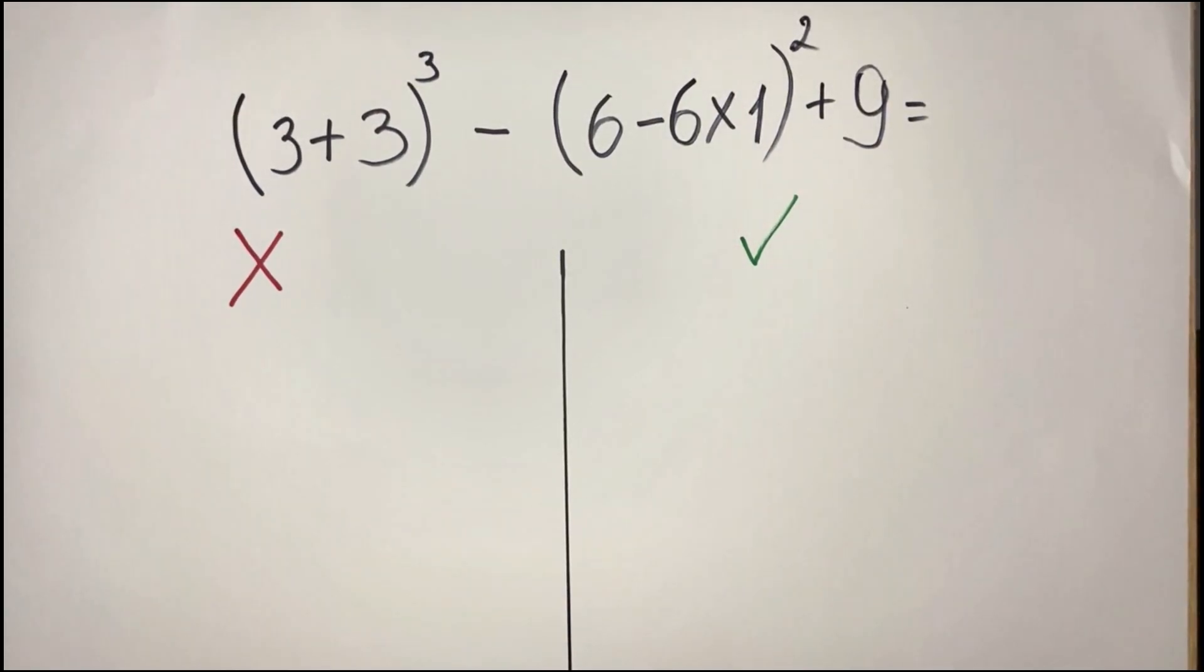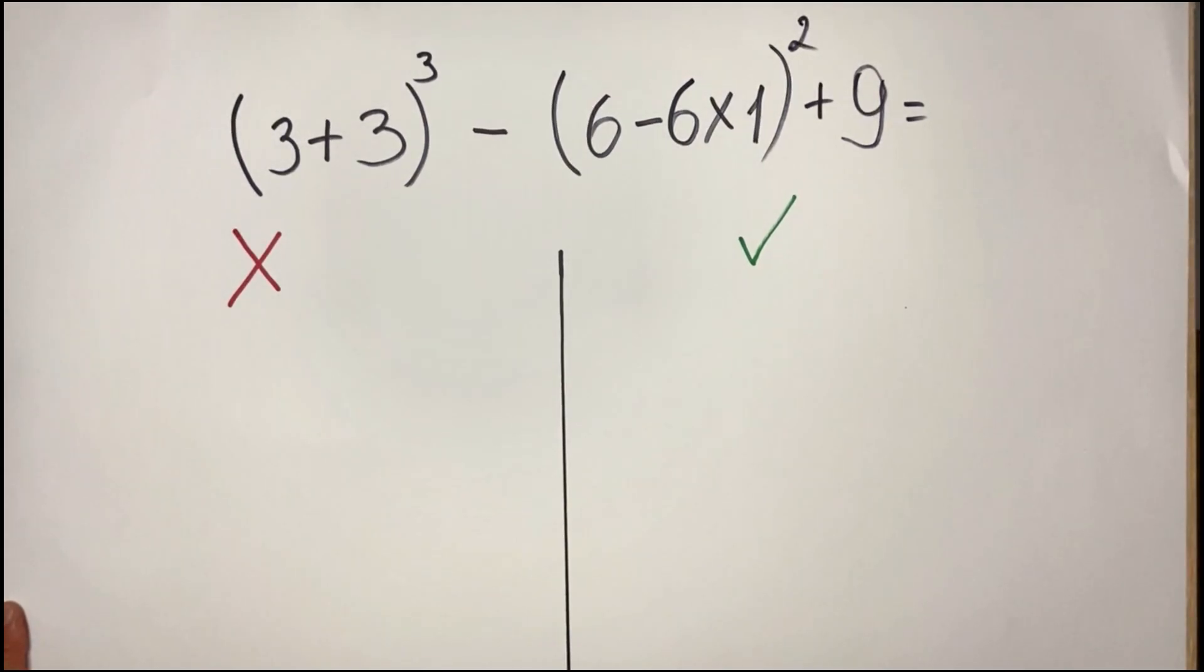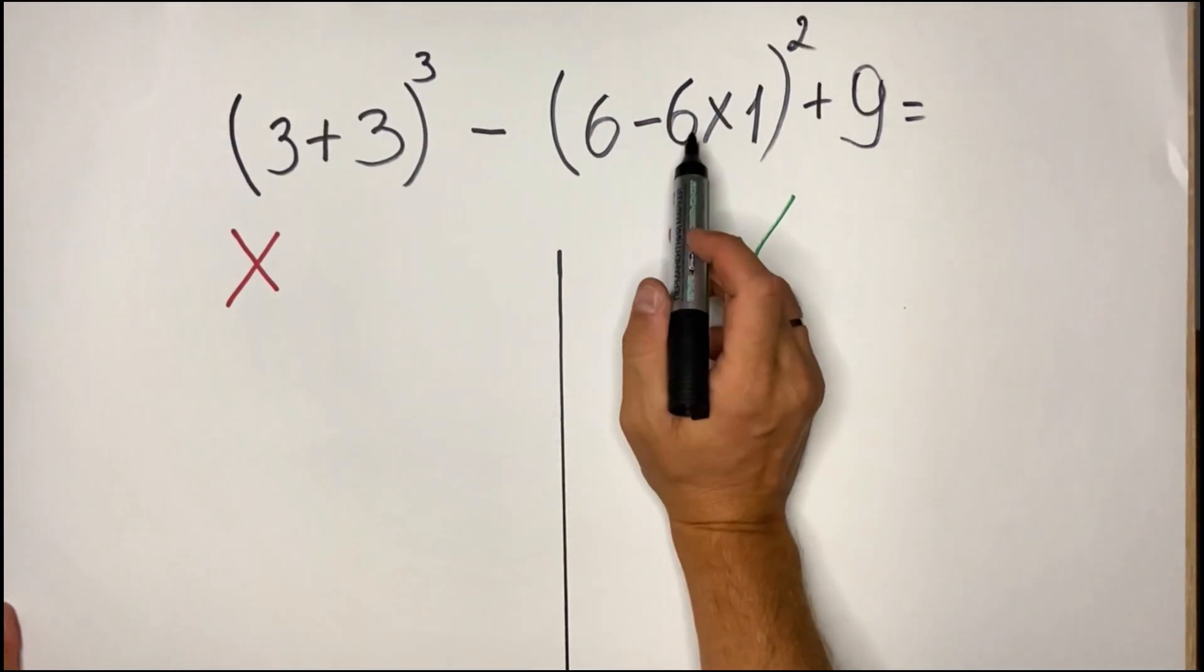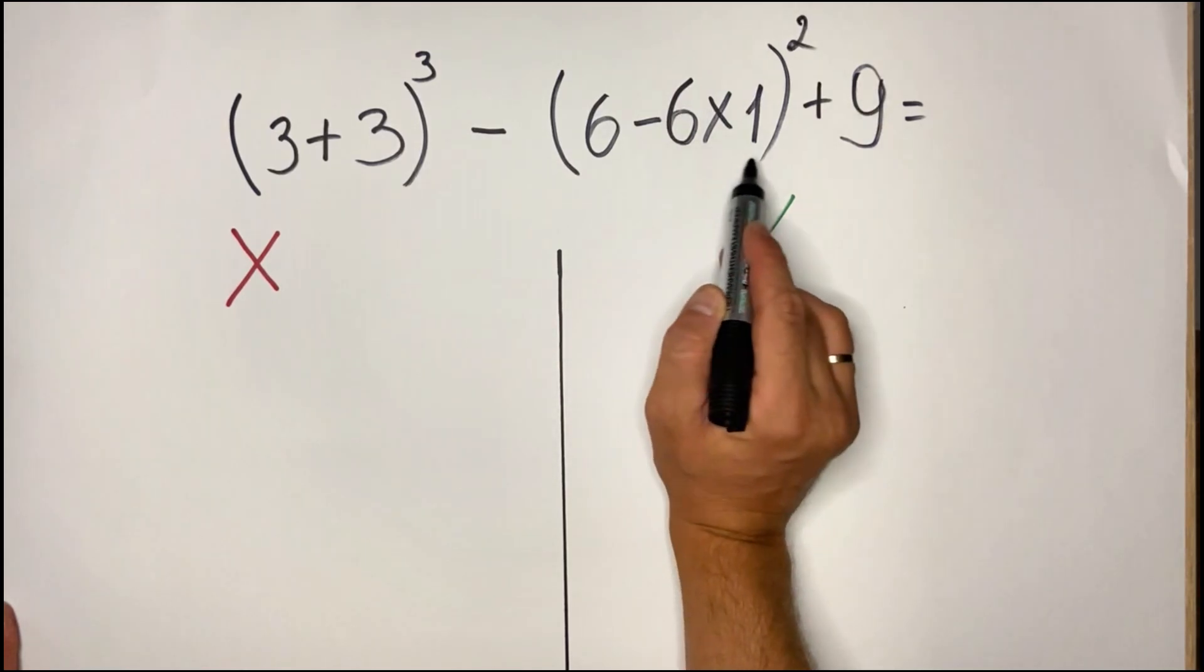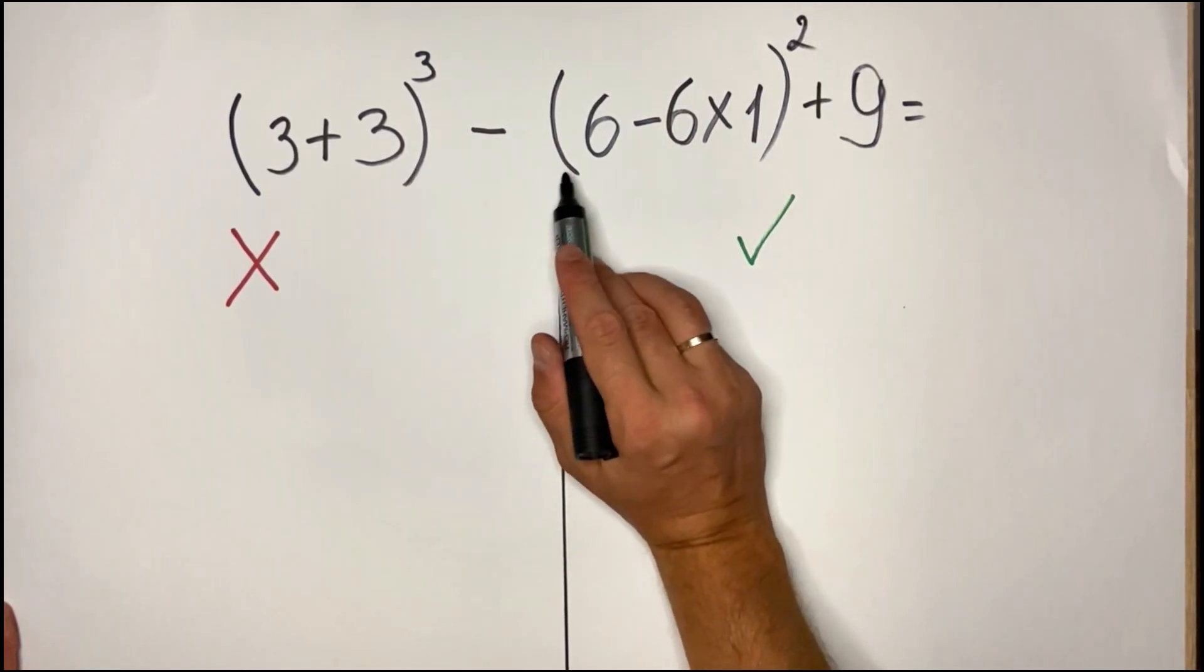A mistake that people would do, as I see here, would be not following the order of operation in this part of the equation.